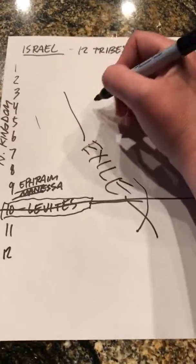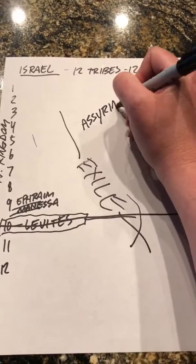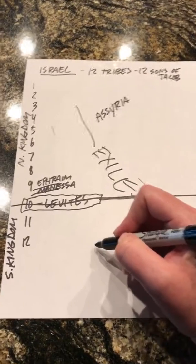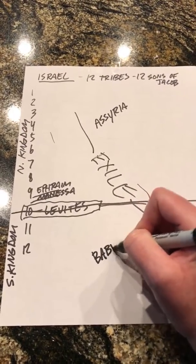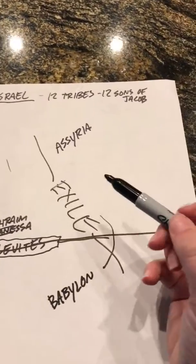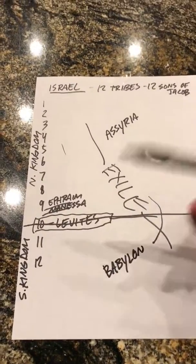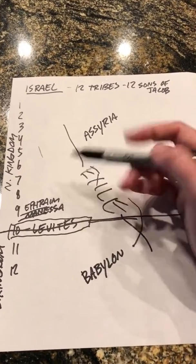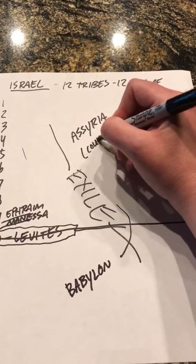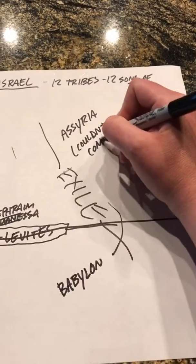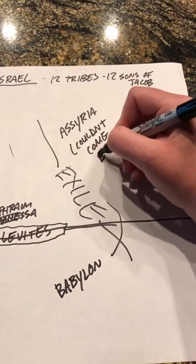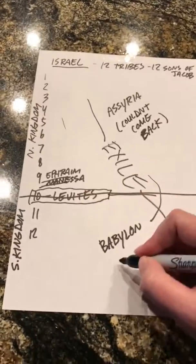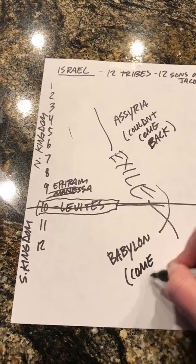The northern kingdom went into exile to Assyria, and the southern kingdom — along with a portion of the Levites — went into exile to Babylon. The northern kingdom, even today, hasn't been able to come back from exile. They are still in exile today. But the southern kingdom was able to come back.